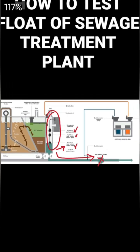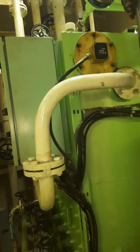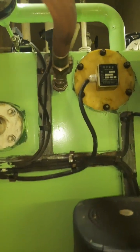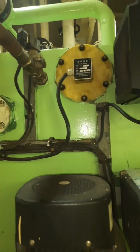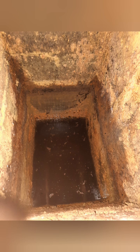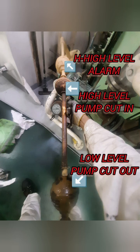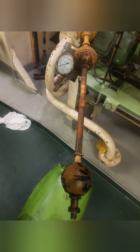And if the topmost float is lifted, it will trigger the alarm — the high level alarm. This is the basic testing of the sewage treatment plant, which we will now demonstrate on an actual sewage treatment plant. You can see the float switches on this plant. Inside the last chamber it looks like this, and the water is filled up in this fashion. We have taken out the float switch — you can see the three floats: the topmost is the high level alarm, the middle is the high level, and the bottom most is the low level.